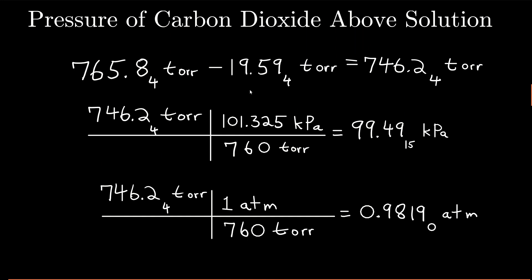Next, I'm going to calculate the pressure of the carbon dioxide above the solution. Remember, there's carbon dioxide two places: above the solution and in the solution. This uses Dalton's law of partial pressures — this is the total pressure inside of that container, which is the same as the atmospheric pressure in torr, minus the vapor pressure of water that I read from that table. The difference is the pressure of carbon dioxide gas in that container in torr. Now I'm going to change that to kilopascals because I'll need that for one of my calculations, and I'm also going to need it in atmospheres for my ideal gas law calculation.